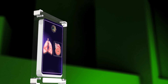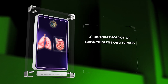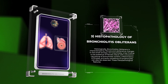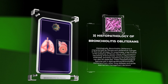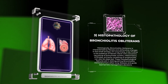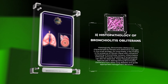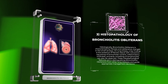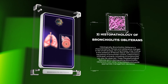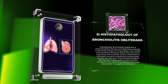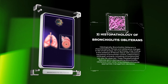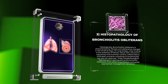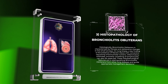Histologically, bronchiolitis obliterans is characterized by fibrosis and obliterative changes in the small airways. On lung biopsy, a key finding is the presence of fibrotic tissue with concentric narrowing of bronchiolar lumens. Inflammatory infiltrates, primarily consisting of lymphocytes, can also be observed.